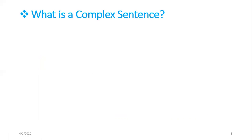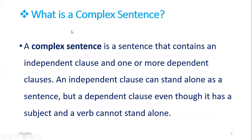So what is a complex sentence? A complex sentence is a sentence that contains an independent clause and one or more dependent clauses. An independent clause can stand alone as a sentence, but a dependent clause, even though it has a subject and a verb, cannot stand alone.